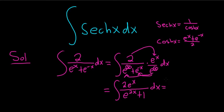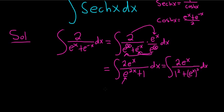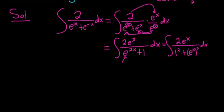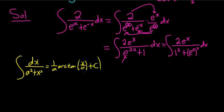This is going to work for us because we can write this as 2e to the X over 1 squared plus e to the X quantity squared. The reason is e to the X squared is the same thing as e to the 2X. And now we can use a formula that gives us an arctangent. So recall if you have dx over A squared plus X squared, that's equal to 1 over A arctan of X over A plus C.